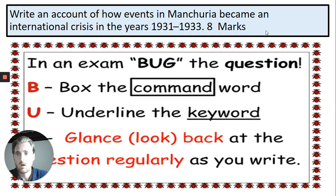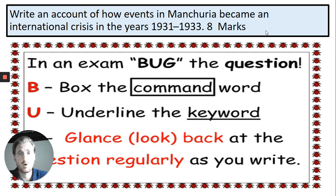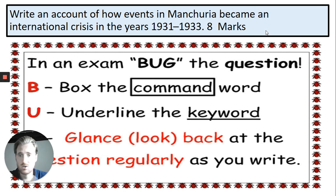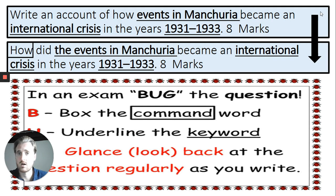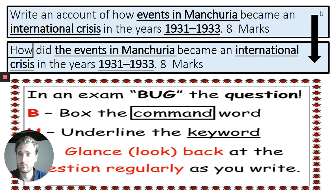So if we look at this question: write an account of how the events in Manchuria became an international crisis between the years 1931 and 1933. The years are really important in this topic and you are going to have to know for some of the questions what happened between certain dates. I want you to bug the question, box the command word, underline the keywords, and then look back at the question as you're writing it to see what it's asking you. Hopefully what you've done is underlined 'the events in Manchuria' — this question is asking you to talk about the events in Manchuria and how it led to an international crisis between those years. You can change 'write an account' and rewrite it as 'how,' which may allow it to make more sense for the exam.